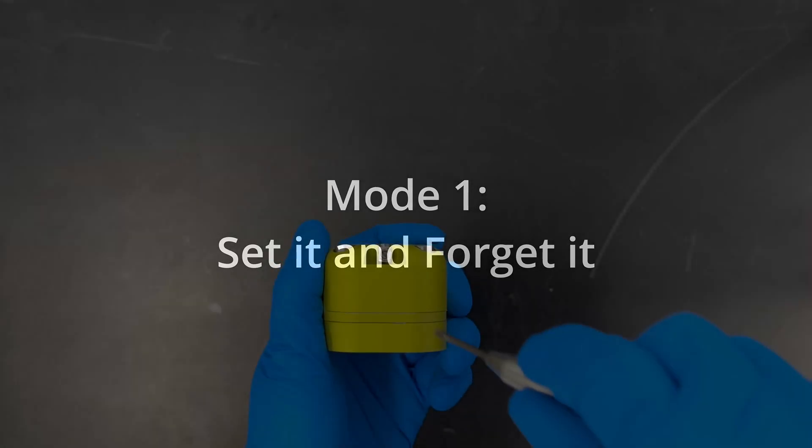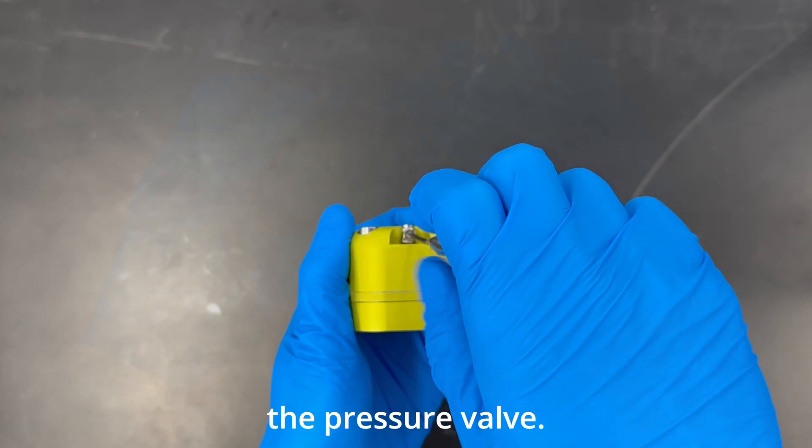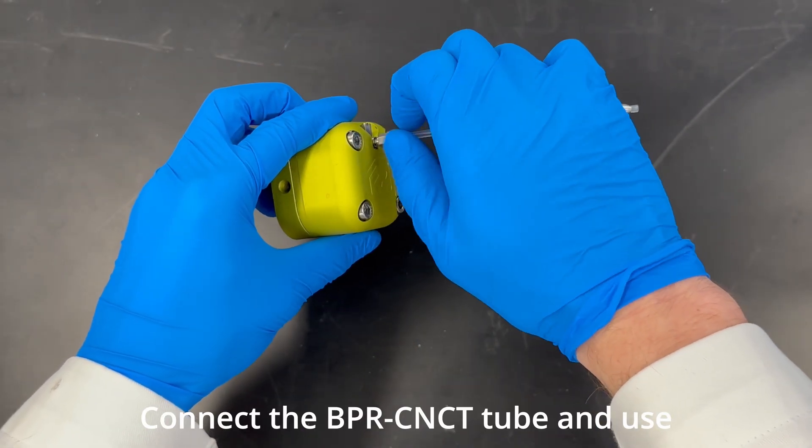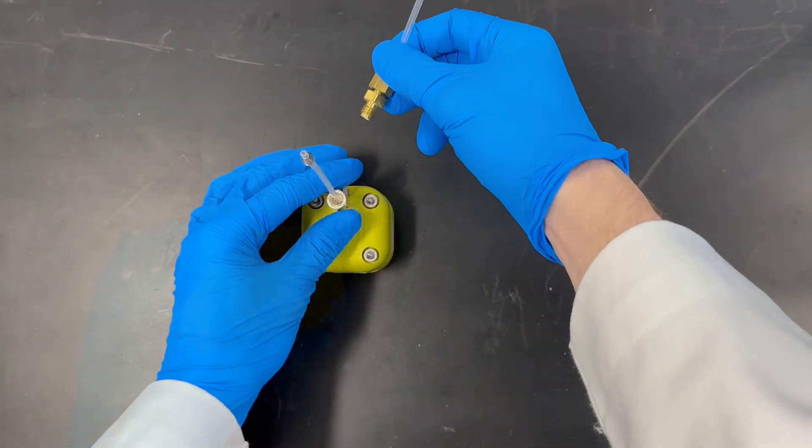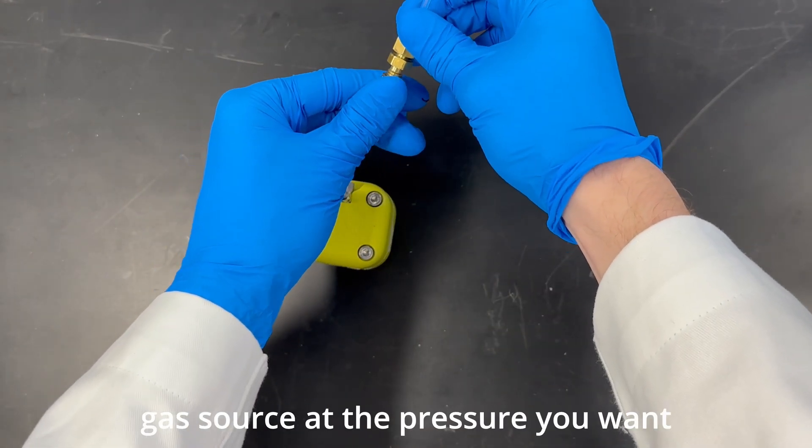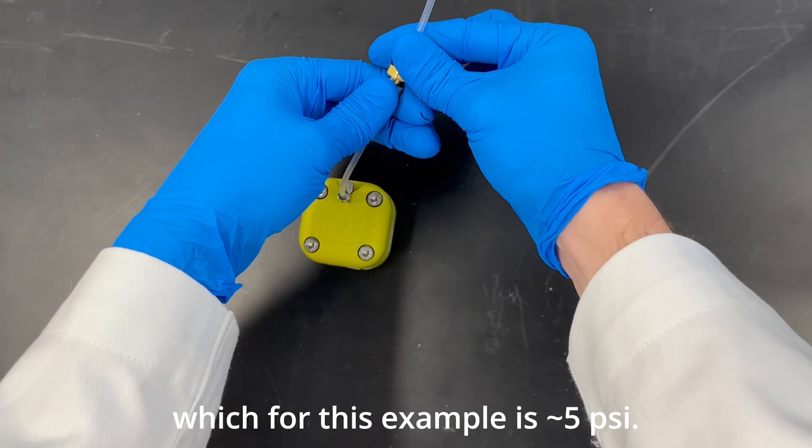The first method we will be looking at is the set it and forget it mode. Begin by using the small flathead screwdriver to fully open the pressure valve. Connect the BPR connect tube and use the adjustable wrench to gently tighten it into the fitting. Connect the BPR to an external gas source at the pressure you want to set your device to, which for this example is around 5 psi.